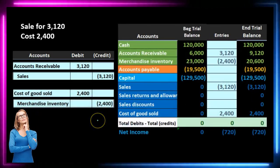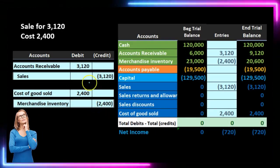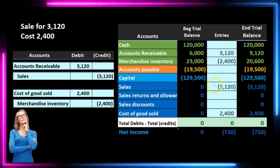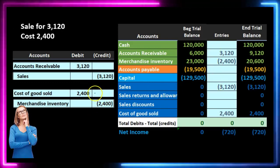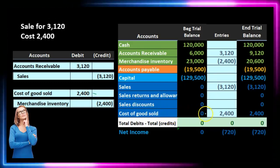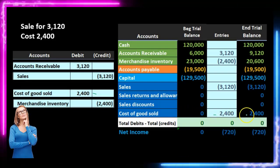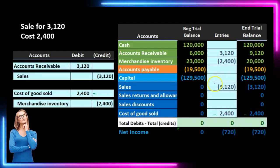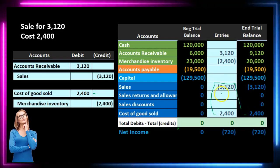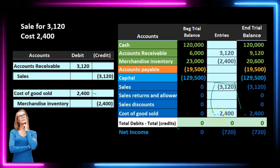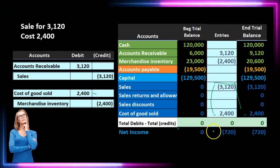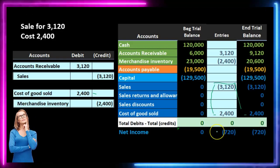Under the perpetual system, we still have the first transaction — the increase in accounts receivable and the increase in sales. But now we have this new component: cost of goods sold going from zero up to $2,400. Net income went up by the sales component of $3,120 and goes down by the cost of goods sold of $2,400. The difference between the two is a net increase in net income of $720.